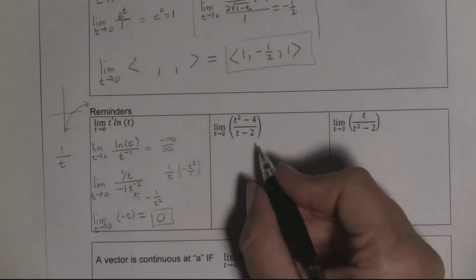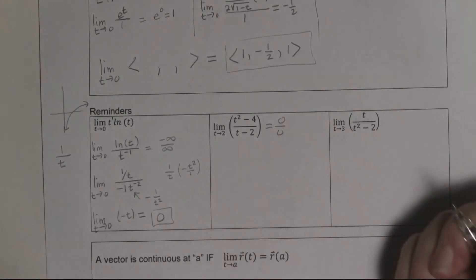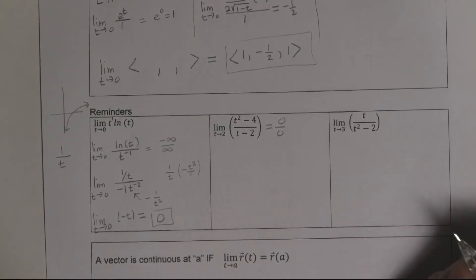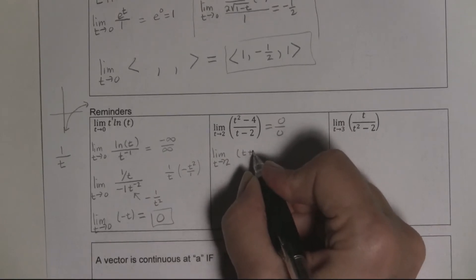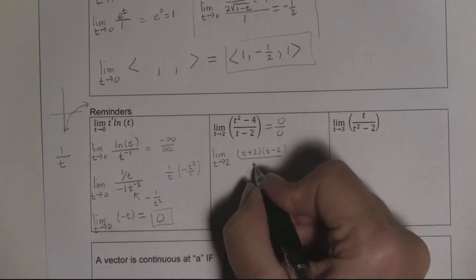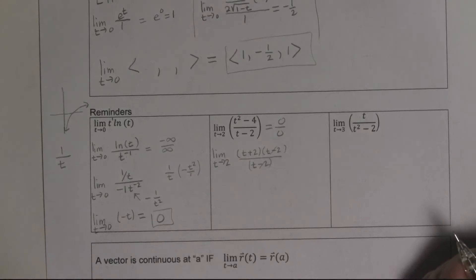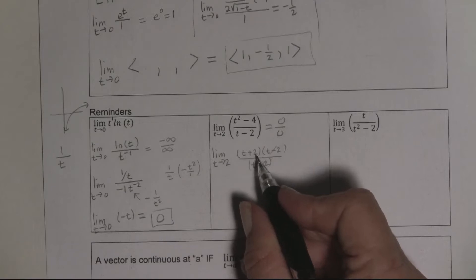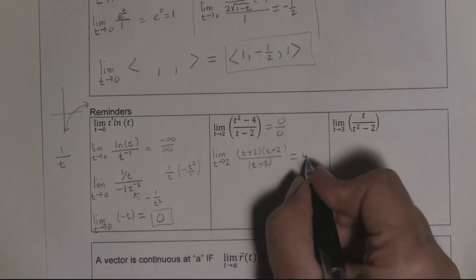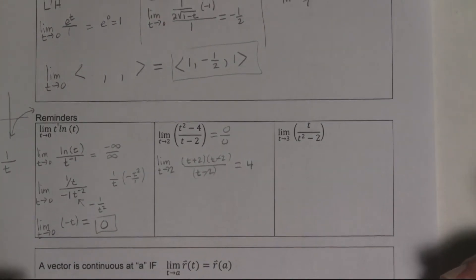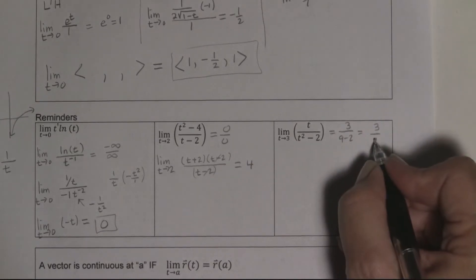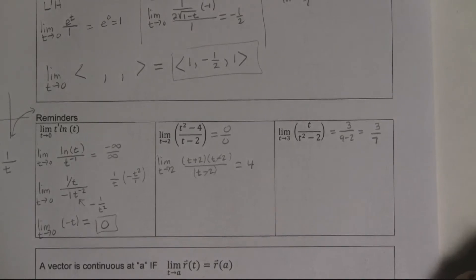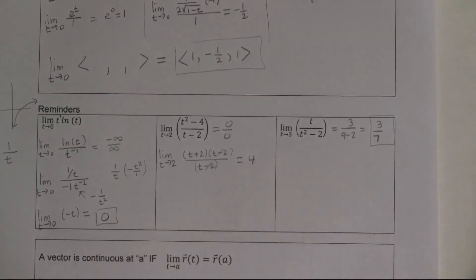Another example has the form 0/0. You could use L'Hôpital's, but factoring works too: factor numerator and denominator, cancel the (t−2) terms, then plug in t = 2 to get 4. A third example: plugging in directly gives 3/(9−2) = 3/7 — no indeterminate form, so L'Hôpital's is not needed and would actually give the wrong answer if misapplied.